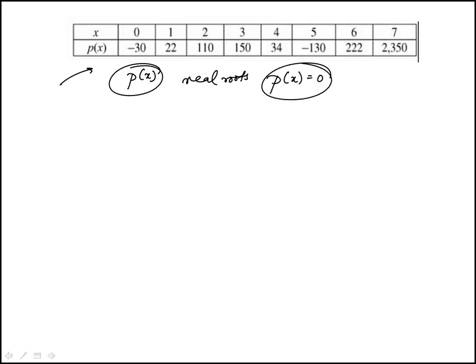First I'm going to qualitatively draw out the information given to us. When x is 0, it's -30 here, so just need to draw it roughly. When x is 1, it's 22 somewhere here, so it kind of goes like that.